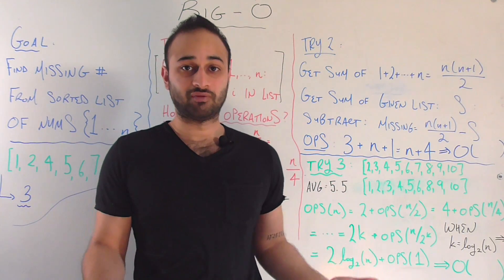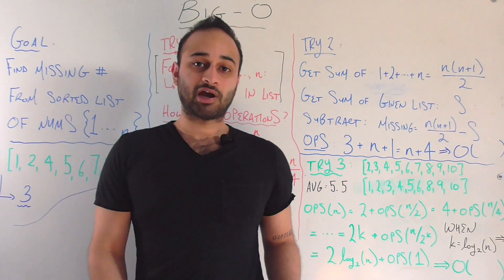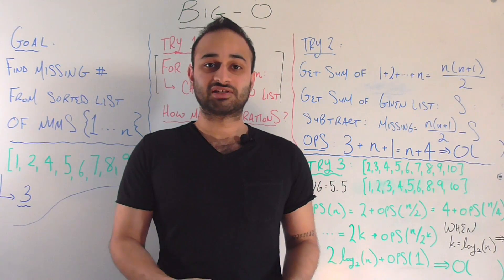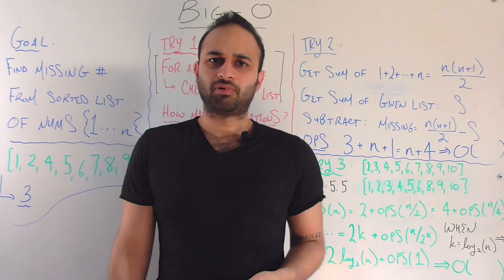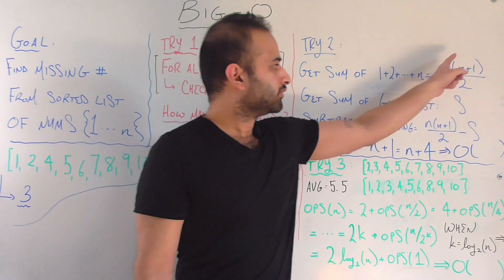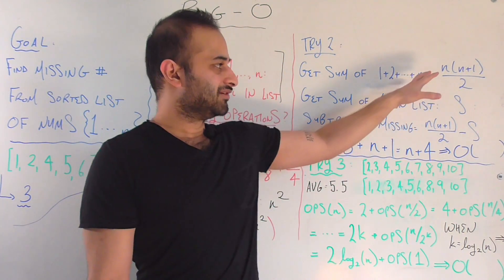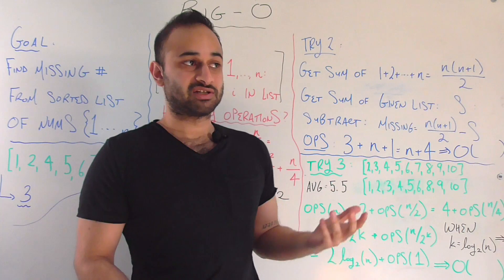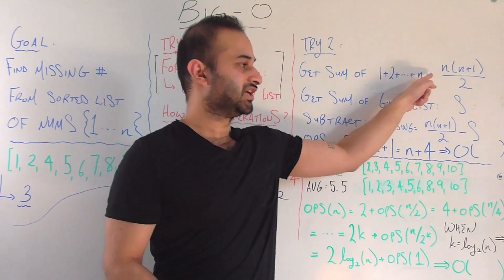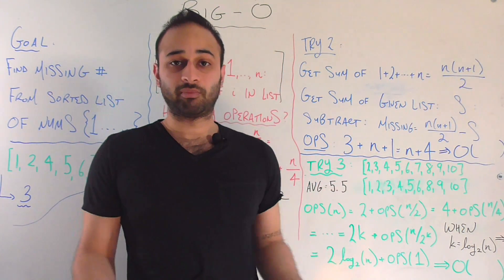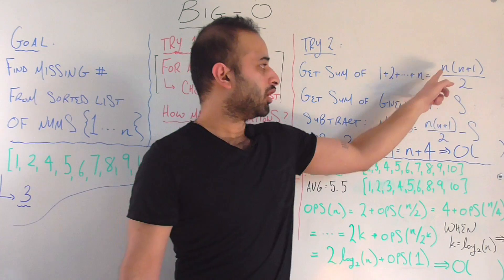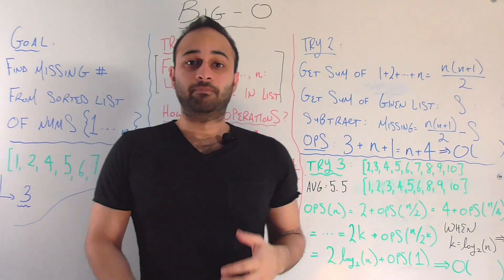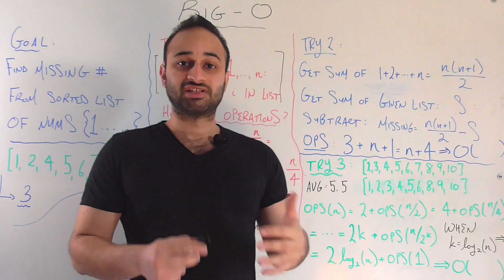Pretty genius solution. Now let's do the same kind of analysis — how many operations is this going to take for a list of size n? We can look at it and say there's this formula we need to compute, and notice it's just a fixed calculation. Whether n is one million or two million, that's not going to change the number of operations needed to compute it. That formula is just one addition, one multiplication, and one division — three operations.